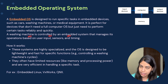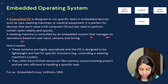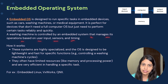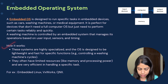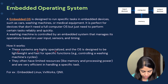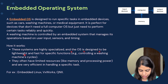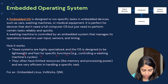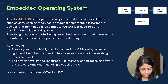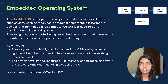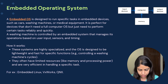A washing machine is controlled by an embedded system that manages its operation based on user input, sensors, and timings. These systems are highly specialized and the operating system is designed to be lightweight and fast for specific functions — for example, controlling a washing machine cycle, managing how many cycles will run.